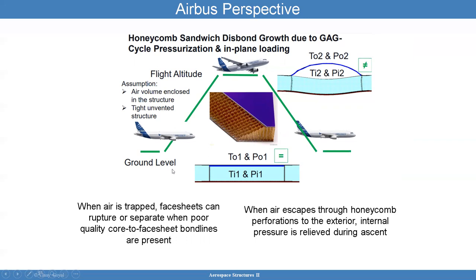The assumption is that you have an enclosed air volume and an unvented architecture. You may have a disbond — some delamination to start with. As you go to altitude, you can see the disbond form as pressure pushes the face sheet out. Then you come back down to ground. We call this the ground-to-air-to-ground cycle.